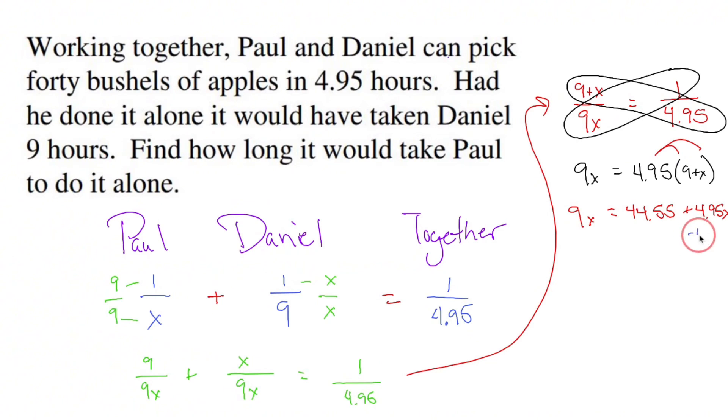I have an x on the left and an x on the right. Let's get rid of the one on the right because it's more pleasant. Minus 4.95x, minus 4.95x. 9x minus 4.95x is 4.05x. Use a calculator. That's going to equal 44.55.